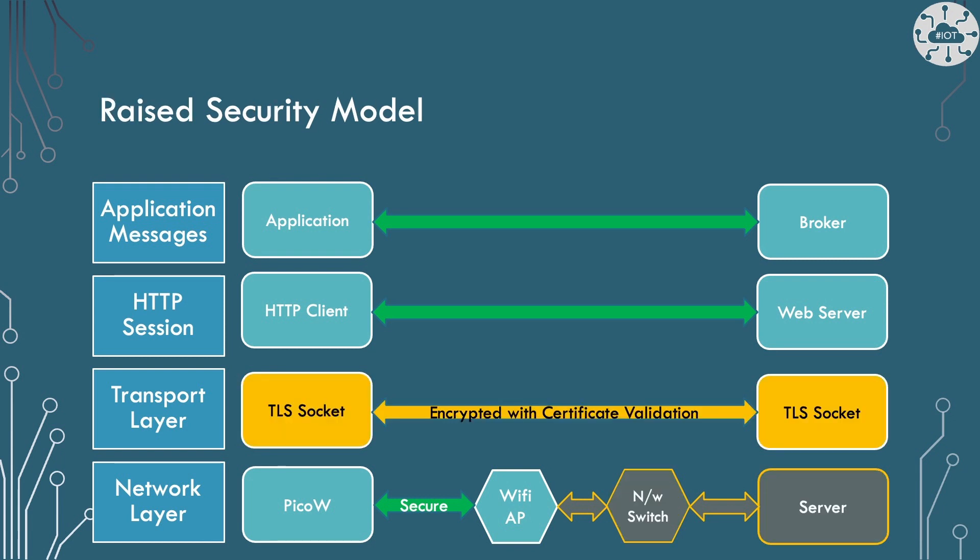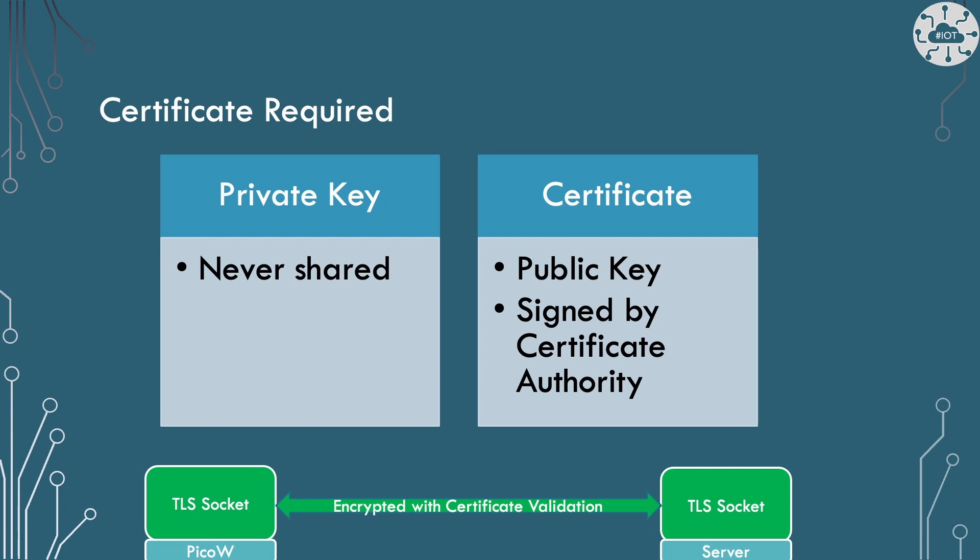The first thing we can do to raise security is to encrypt data within our transport layer. The technology of SSL — Secure Socket Layer — now largely consumed and extended by TLS, the Transport Layer Security, allows us to do this. TLS uses certificates to set up the encrypted connection. These certificates are based on public key encryption technologies. Each device has a private key that is never shared and a certificate that is, made up of the public key and a signature by a trusted certificate authority.